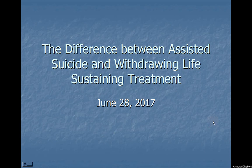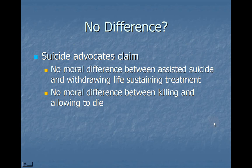This segment will discuss the difference between assisted suicide and withdrawing of life-sustaining treatment. Withdrawing a ventilator in the case of a patient who is hopelessly ill seems like assisted suicide in some ways — you're taking an act that leads to the death of a person. That's what suicide advocates claim: there's no moral difference between giving a person a drug that will kill them and withdrawing life-sustaining treatment. They say there's no moral difference between killing and allowing to die.